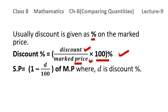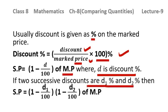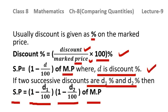If discount is given in percentage D, then SP = (1 − D/100) × MP. If two successive discounts D1% and D2% are given, then SP = (1 − D1/100) × (1 − D2/100) × MP. If there are three successive discounts D1%, D2%, D3%, then SP = (1 − D1/100) × (1 − D2/100) × (1 − D3/100) × MP. Likewise, you can include additional terms for four or more successive discounts.